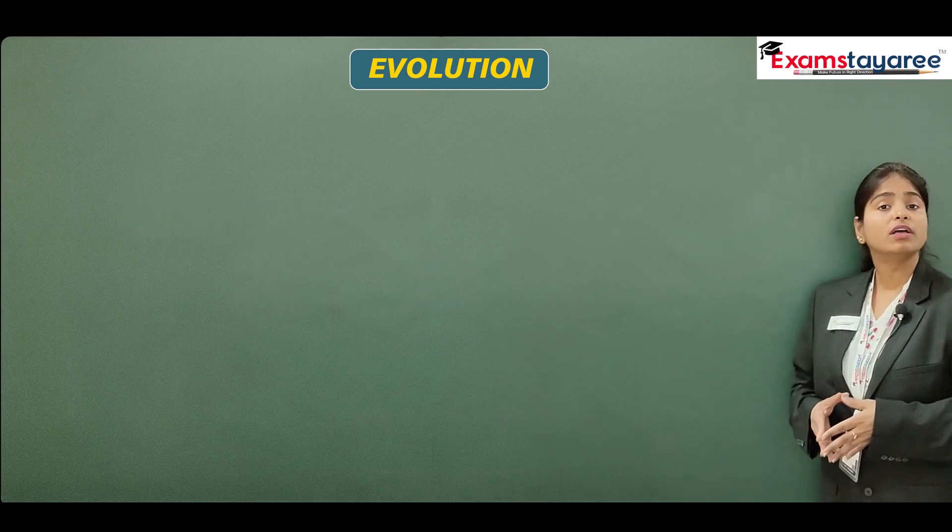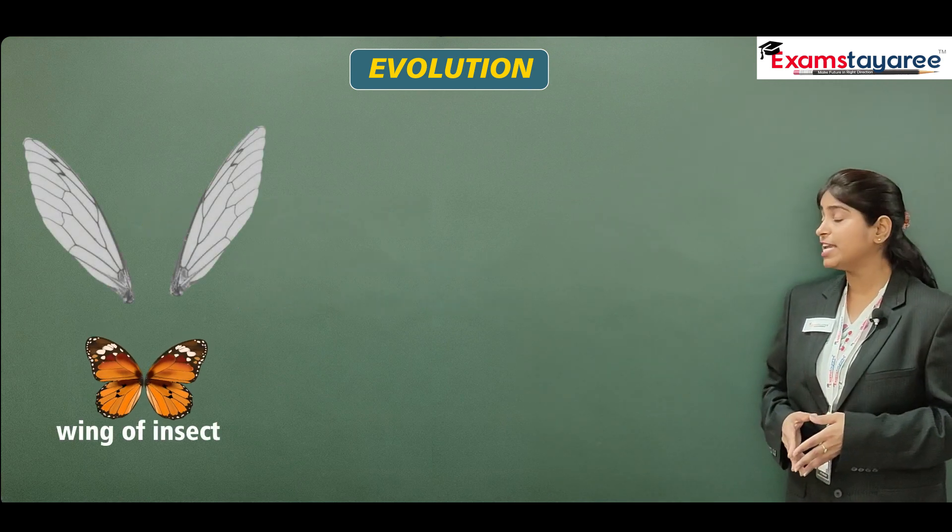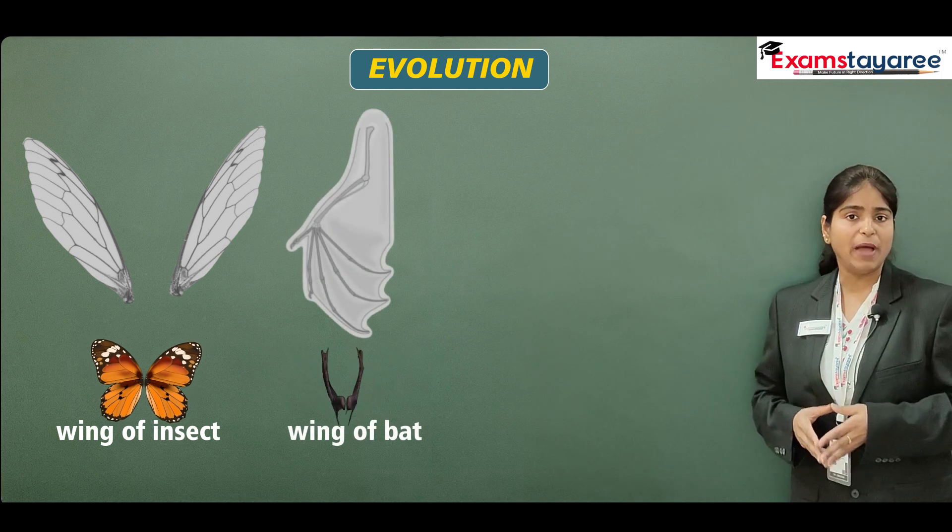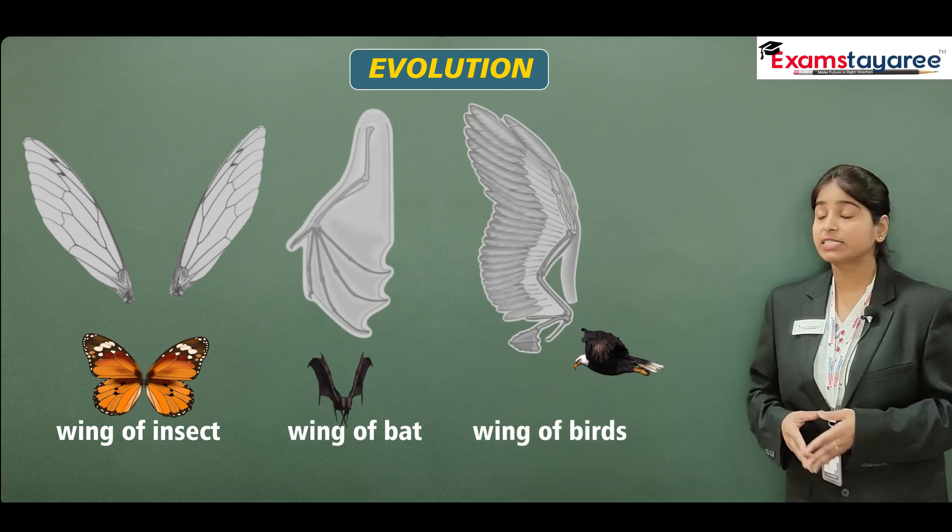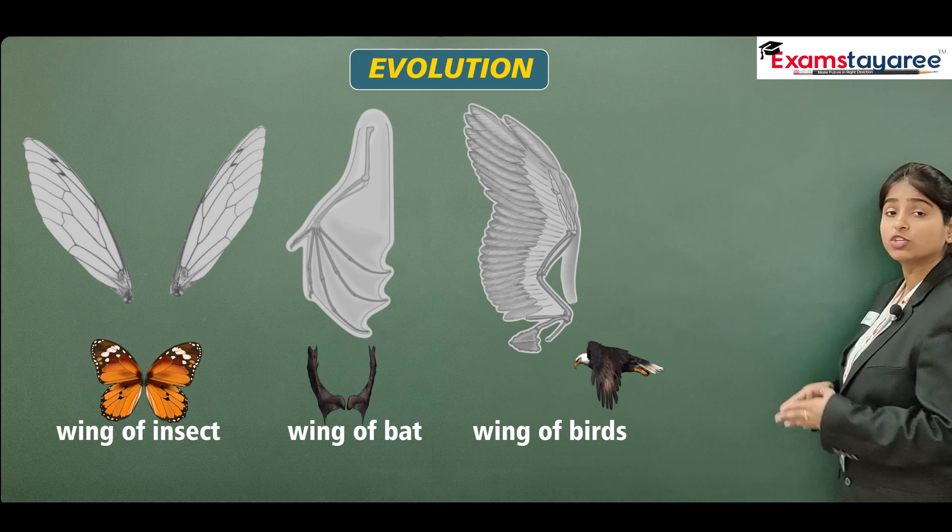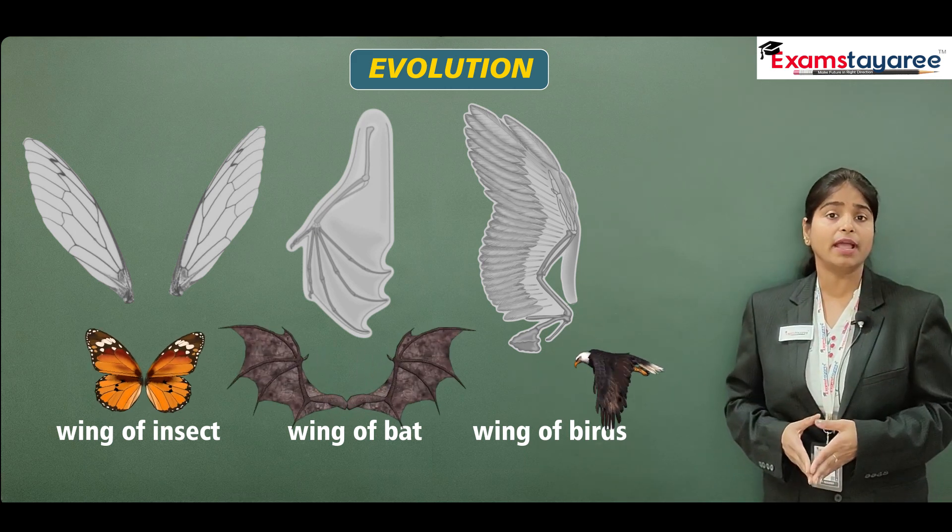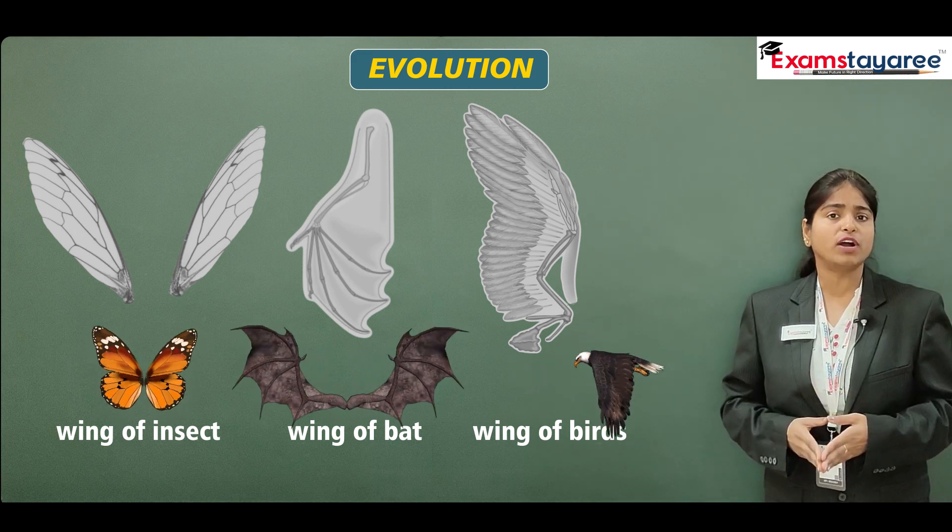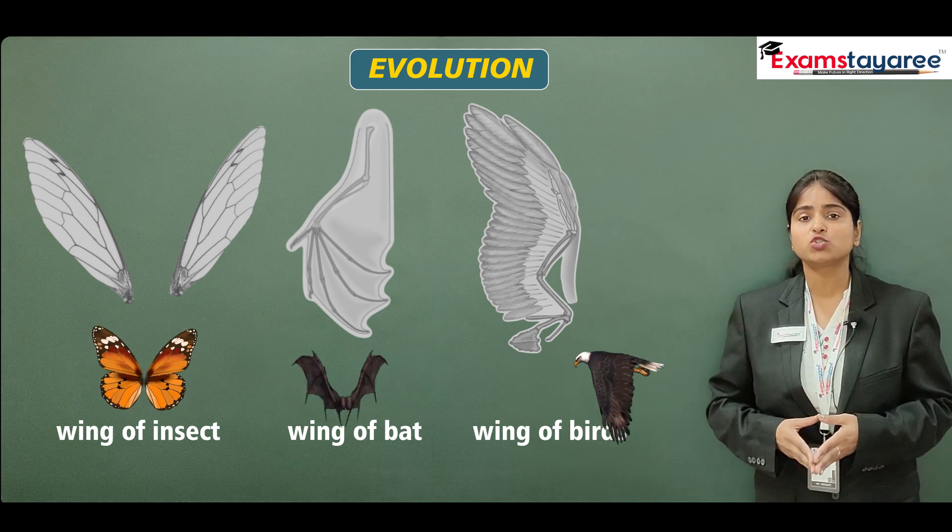As we have the wings of insect, wings of bat and the wings of birds. In tino ke structure dhekhne mein bilkul alag hai but tino ka function eek hai that is to fly.